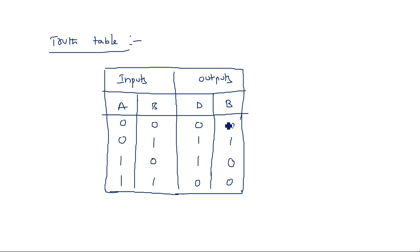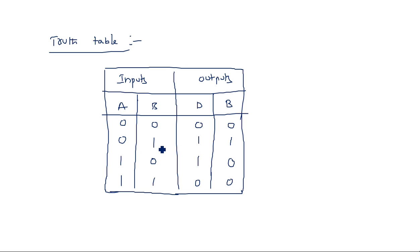By seeing this table you can directly write the expressions. Borrow is 1 at only one place, so borrow equals A-bar·B. The difference has two 1s, so difference equals A-bar·B + A·B-bar, similar to your sum expression.